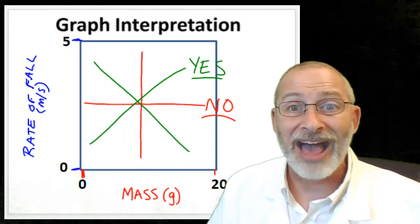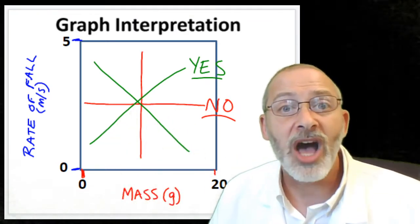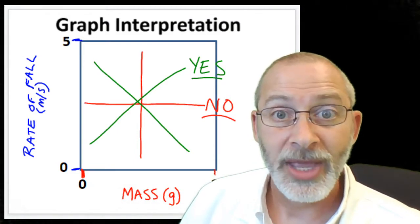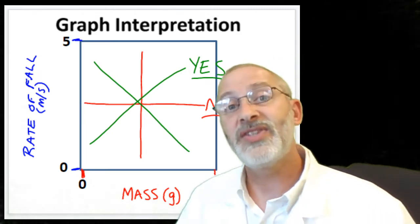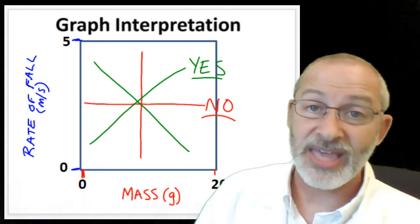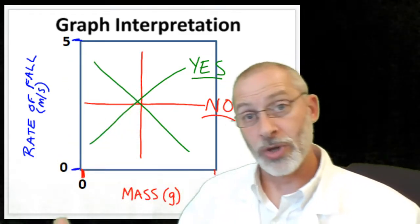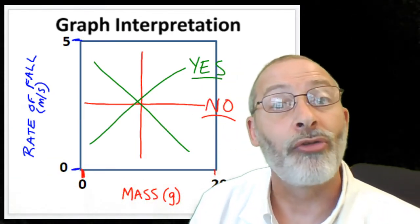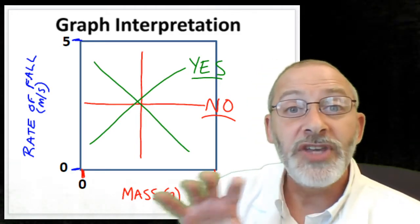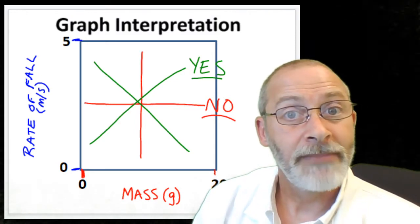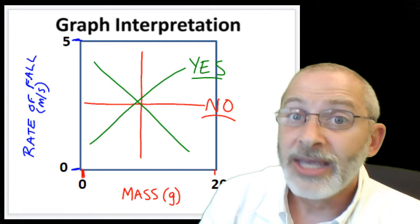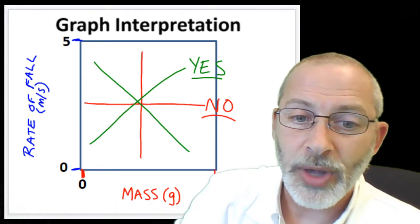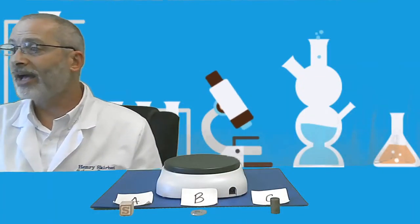You're going to be generating a graph during this lab, and you're going to look at the shape of your lines. The shape of your lines will help you make your conclusion as to whether there is a relationship or not, and then you can state what that relationship is — as one goes up the other goes up, as one goes down the other goes up, or as one goes up the other does nothing. Feel free to watch this part again if you'd like to understand how to interpret your graph when you're done with your number crunching.